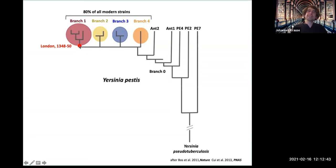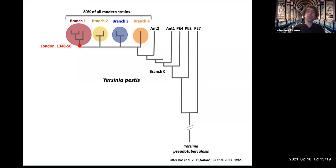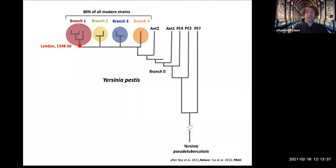Interestingly, the Black Death strain doesn't have any genomic position not found in its descendant strains. It's nothing special — the strains you find in the Grand Canyon or Madagascar today could theoretically cause the Black Death again if brought back to medieval conditions. There's nothing that made the 14th-century strain particularly virulent. It would cause the same mortality. We're fortunate that we don't have those conditions anymore — the flea-infested, rat-filled environments of medieval times — but it remains a threat if the right conditions were met.